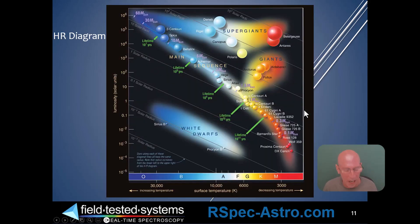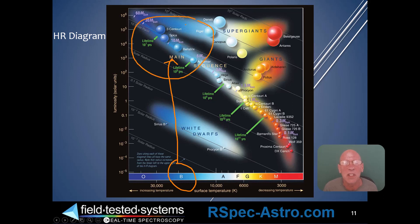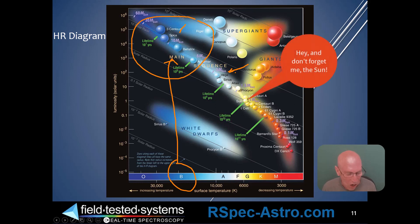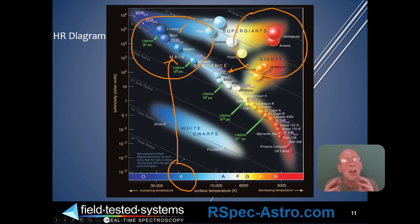Let's go back to our HR diagram. We can see that BE stars are over here, so this BE star is going to be somewhere up in this area, like Spica. There's our beloved Vega, for example. Now we've seen two different regions in the HR diagram using data that we captured ourselves.